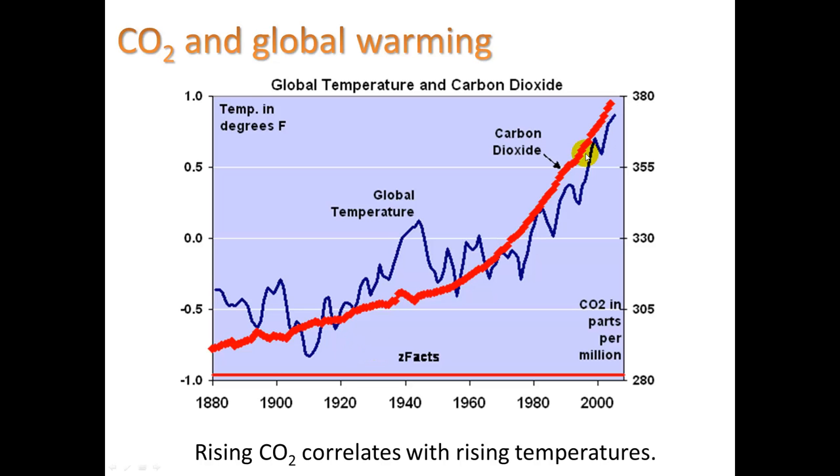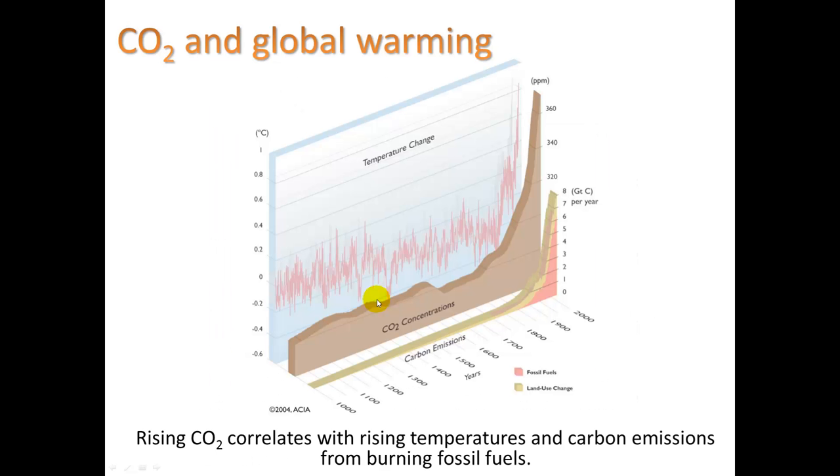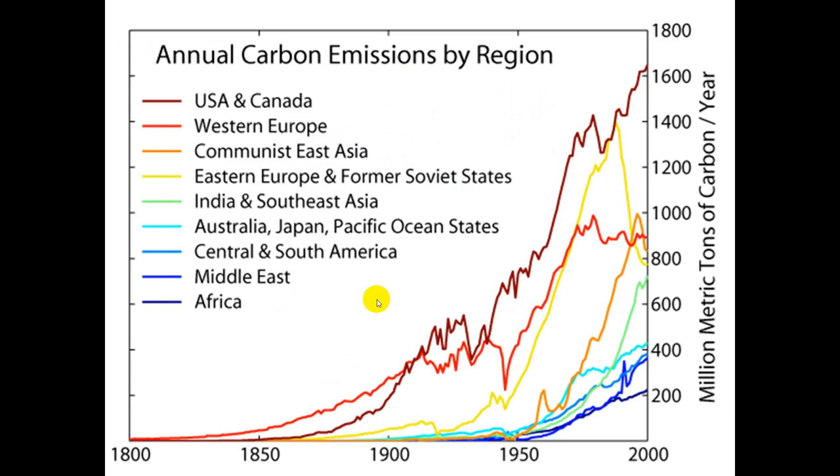We can see a correlation here pretty tight between CO2 levels and global temperature. Another graph showing the same thing. Another graph showing that USA and Canada are the leaders in annual carbon emissions. Oh yeah, oh yeah, that's right. So, we also have Africa here, being the least developed country, having very, very small carbon footprint.